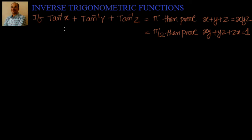We have been given that tan inverse x plus tan inverse y plus tan inverse z equal to pi. We have to prove x plus y plus z equal to xyz. Instead of pi, if it is pi by 2, then we have to prove xy plus yz plus zx equal to 1. So what will be our first step?